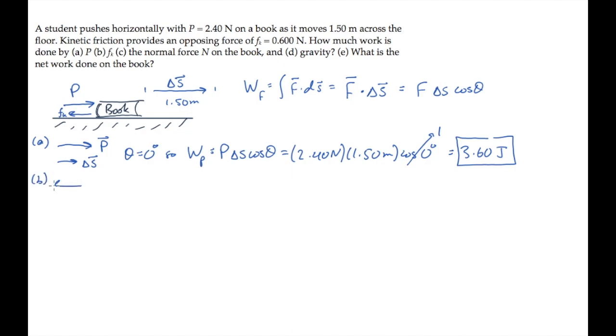Part B asks for the work done by the kinetic friction force. In this case, friction is to the left, the displacement is to the right, so the angle theta between them is 180 degrees. Now for the work, we get a negative number because cosine of 180 is negative 1, and it works out to negative 0.900 joules.